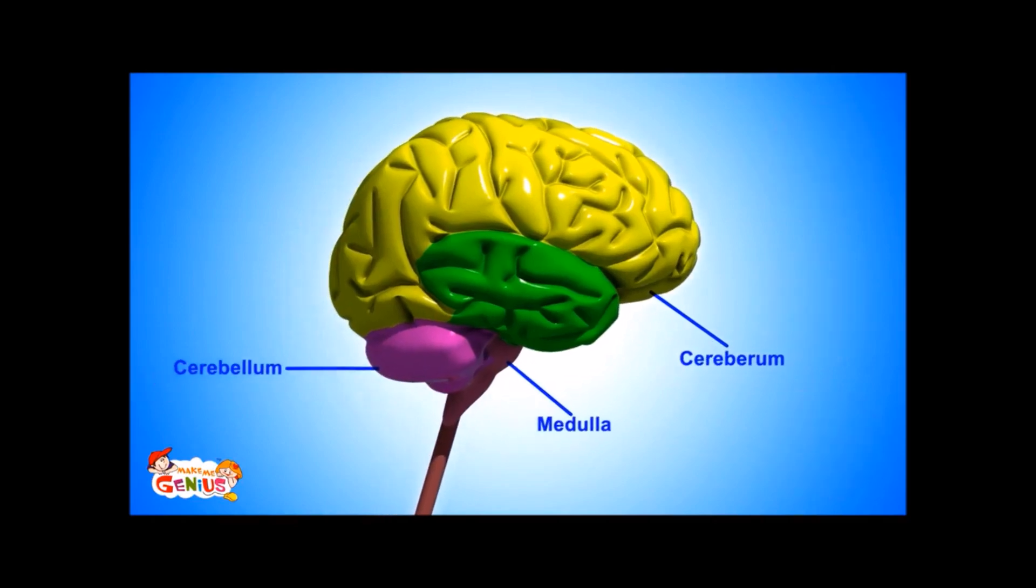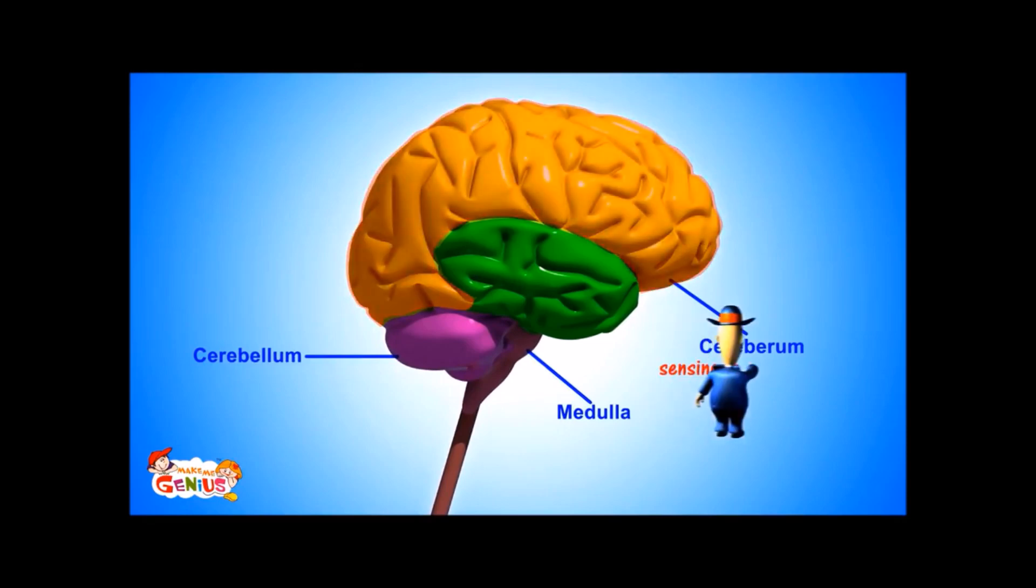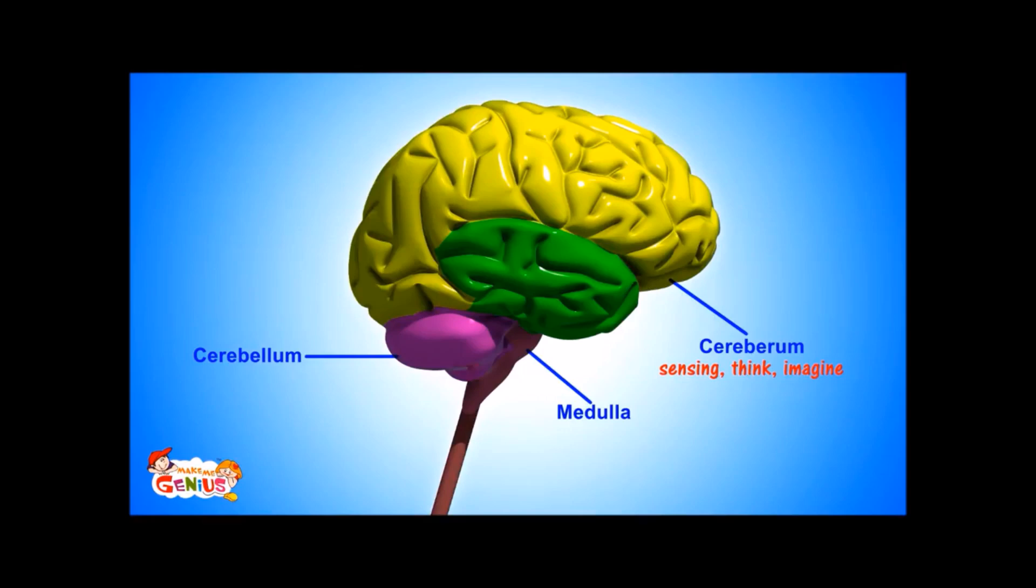So now you know about the brain. Can you remember it all? Good. The cerebrum is in charge of sensing, thinking, and imagination. You're right. The cerebellum is also responsible for muscle movement and control, and it also helps us in learning. Great. You're right about the medulla also. It is running our body from the inside.